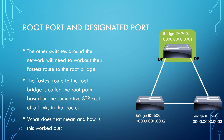So to recap: we have the root bridge with designated ports. Now, the next step in the STP process is that the other switches need to work out their fastest path — the lowest cost path — to reach the root bridge. This is called the root path, and it's based on the cumulative STP cost of all links in that route. STP assigns a default cost value to all interfaces depending on their speed.